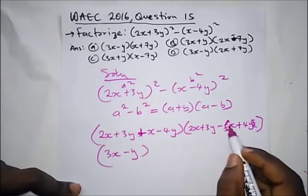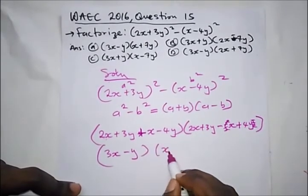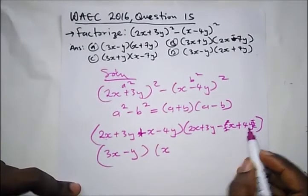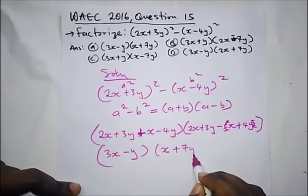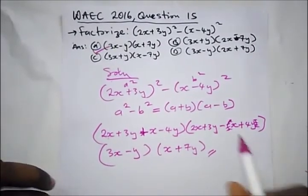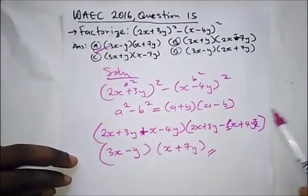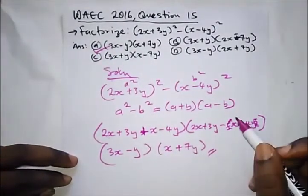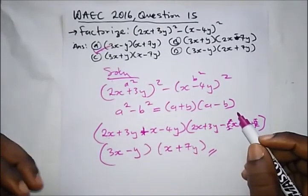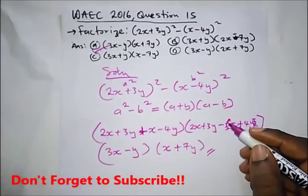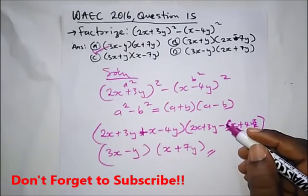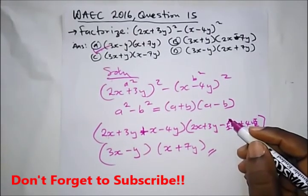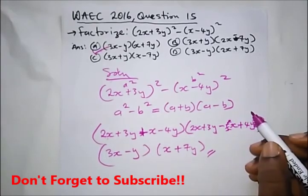We get (3x minus y)(x plus 7y), and the correct option is option A. Thank you for staying tuned to the Destined to Win Tutorial. See you in our next video where we treat more WAEC past questions on factorization. Please like, share, and subscribe to this channel — you are destined to win.